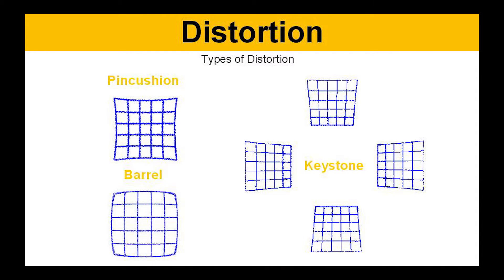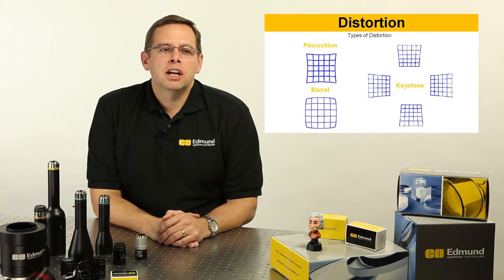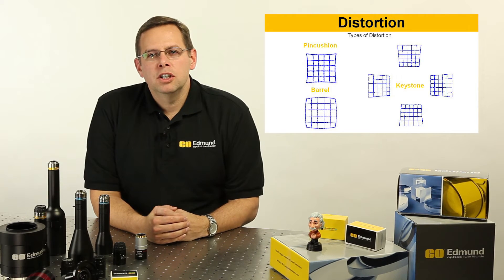Pincushion distortion is positive distortion. It's actually a change in positive magnification across the field of view from the center of the image. This essentially means that things are moving into a higher magnification range as you go out, creating what looks like a pincushion effect.